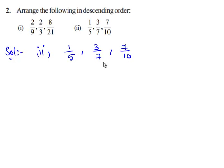Since these three fractions have different denominators, we cannot compare them directly. So we need to obtain a common denominator for 1/5, 3/7, and 7/10.